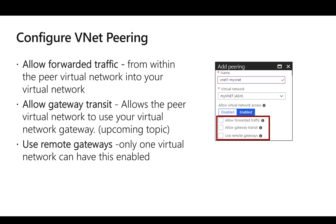There are two other settings available: one is called 'Allow Gateway Transit' and the other is 'Use Remote Gateways.' If we want to share the gateway connectivity or the gateway device between multiple virtual networks, we use these settings. If a VNet has a gateway device and we want to share it with other VNets, we select 'Allow Gateway Transit' in that particular virtual network. The other virtual networks that want to use that gateway must select 'Use Remote Gateways.'